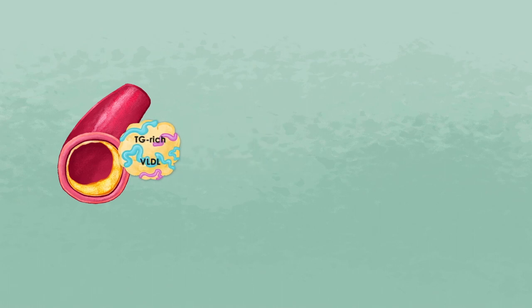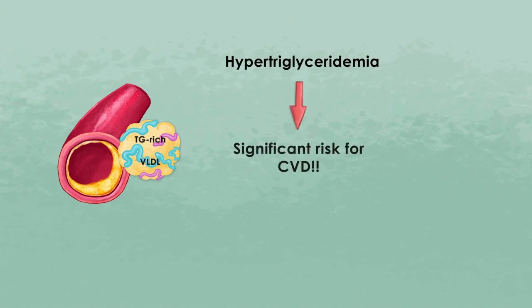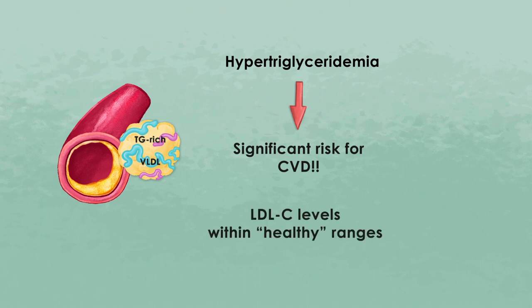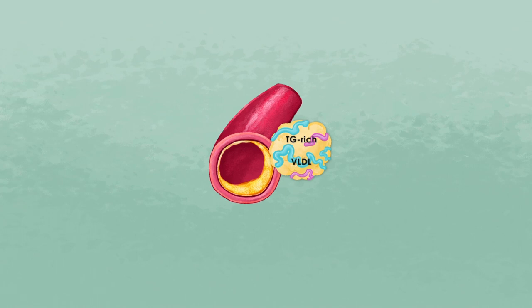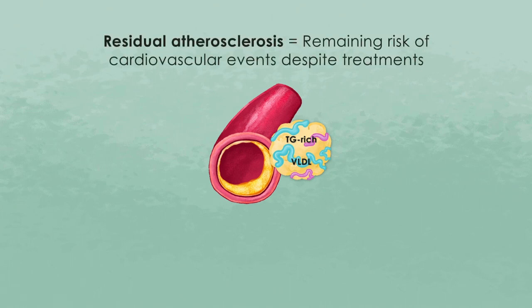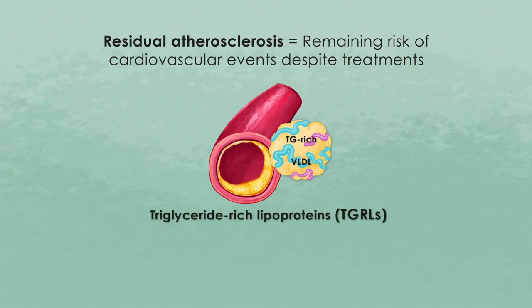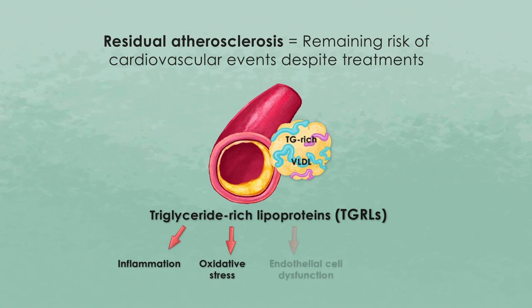So far, we talked a lot about atherosclerosis and LDL cholesterol. However, we should also talk about triglycerides in the context of atherosclerosis. Patients who have hypertriglyceridemia may be at significant risk for cardiovascular diseases, even if their LDL cholesterol levels are within healthy ranges. Recent genetic and epidemiological studies have demonstrated that triglycerides and triglyceride-rich lipoproteins, such as VLDL, are the main causal risk factors of residual atherosclerosis — defined as the remaining risk of cardiovascular events despite treatments that lower LDL cholesterol, blood pressure, or high glucose levels. Triglycerides, triglyceride-rich lipoproteins, and their metabolites can promote atherosclerosis via increasing inflammation, oxidative stress, endothelial cell dysfunction, and formation of foam cells.